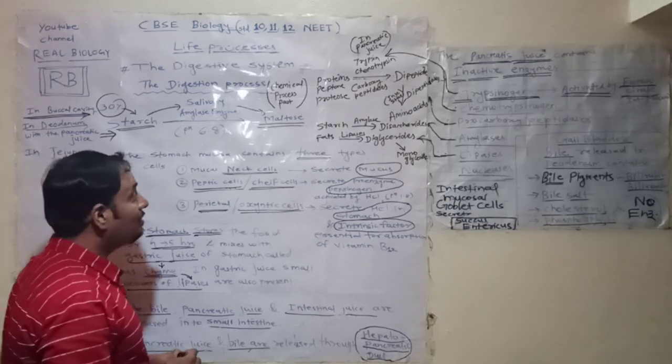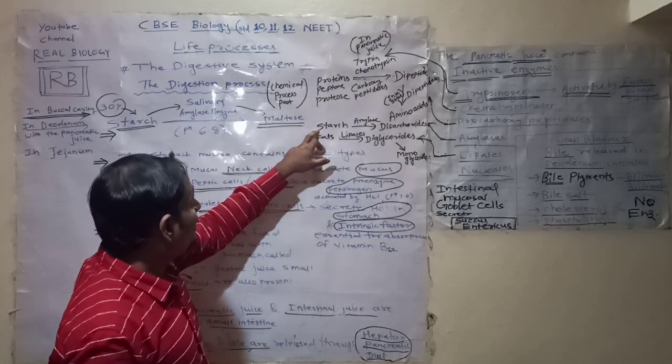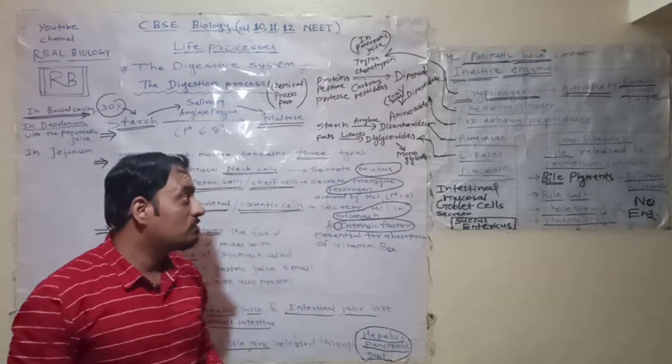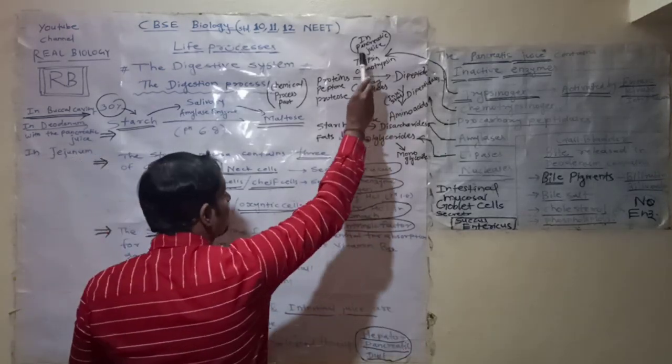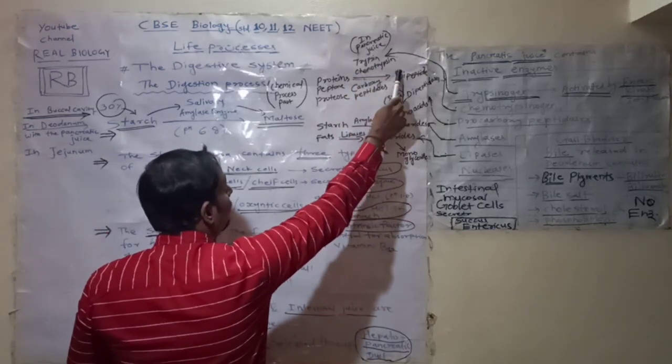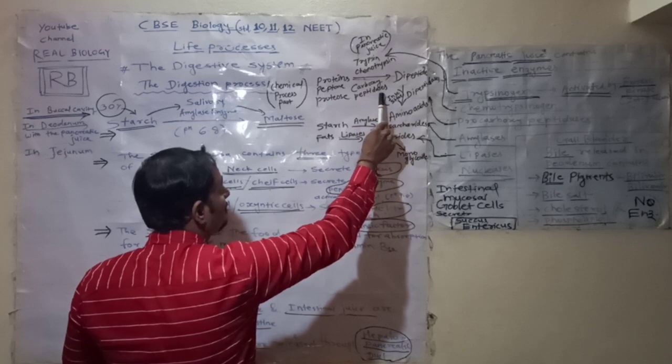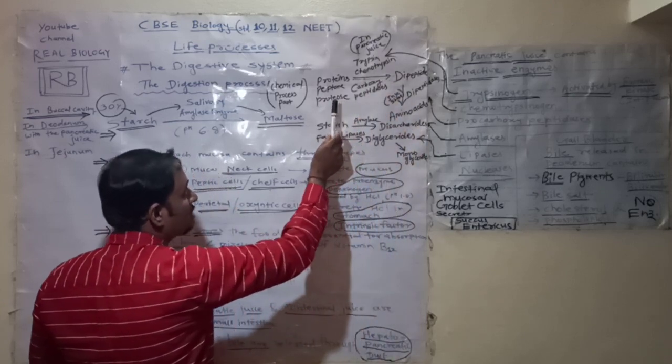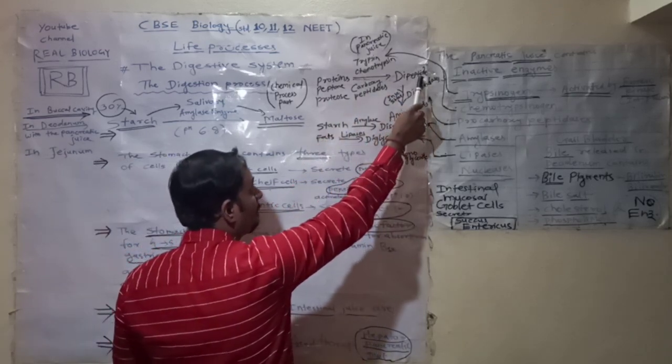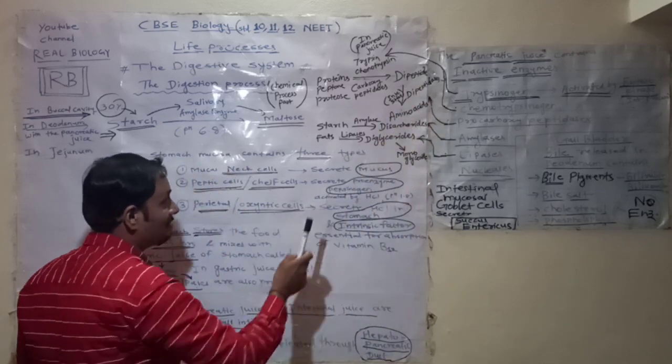Next, how are these second kind of things digested? Proteins. Proteins are digested by using proteases such as trypsin, chymotrypsin, and carboxypeptidases. These convert proteins, peptone, and proteose into dipeptides, and dipeptides are further broken down to amino acids.